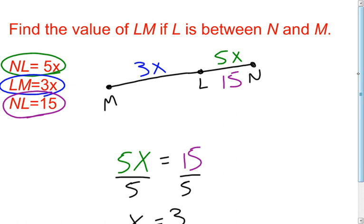And it wants me to find, notice, the value of the length of segment LM. Well, now that I know what X is, I can come back up here. The length of segment LM is 3X. Well, 3 times X, and X we found to be 3. Therefore, I just figured out that the length of segment LM is going to equal 9 units.